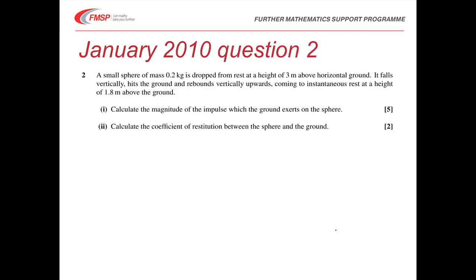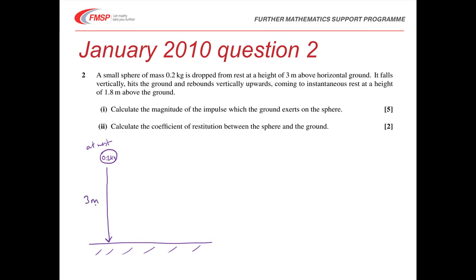Let's do a couple of examination questions. For the first one, I'm going to draw a picture. Here's the floor, and a small sphere of mass 0.2 kilograms is dropped from rest — it's going straight down and hit the floor. It starts at rest at a height of 3 metres to the ground, falls vertically, hits the ground and rebounds. I'll draw the rebound to the side — it bounces up and we're told it rebounds to 1.8 metres.